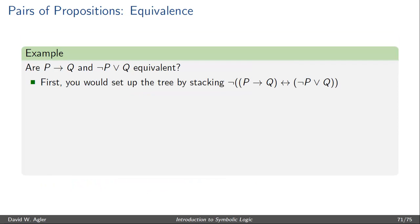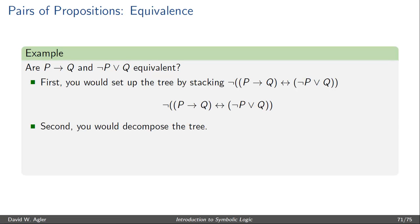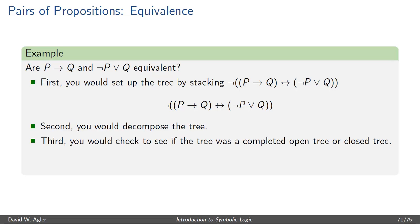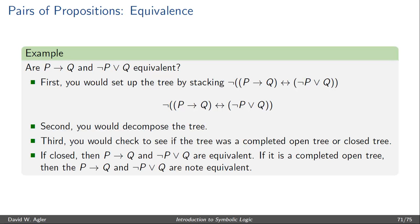Let's look at a short example. We might wonder if P right arrow Q and not P or Q are equivalent. To test this, we would first take those two formulas, create a biconditional out of them, and negate that biconditional. In other words, the truth tree setup would involve the negation of the biconditional formed from those two formulas. The next step would be to decompose the tree and check whether it is open or closed. If the tree was closed, then P right arrow Q and not P or Q are equivalent. If the result was a completed open tree, then the two formulas are not equivalent.